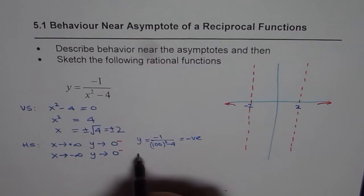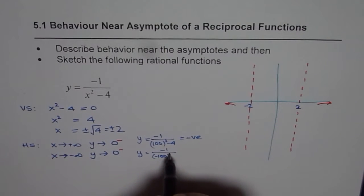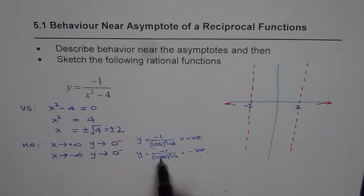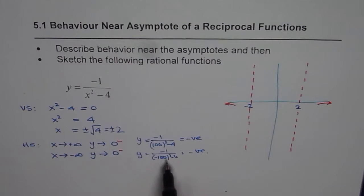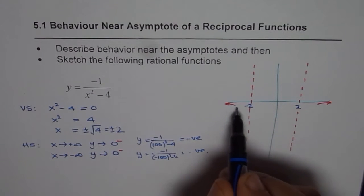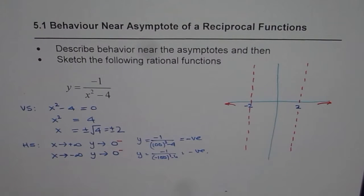Similarly, if you substitute x = -100: y = -1 / ((-100)² - 4). Again you get a negative value, because squaring a negative number gives a positive result. So we are approaching from the negative side. Normally with 1 over x you see opposite ends, so that is the reason for taking this example — it really helps you appreciate the concept.